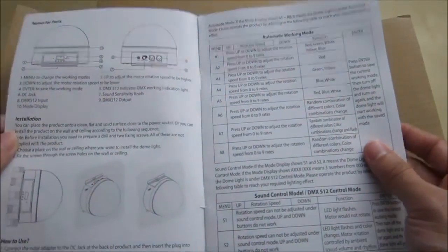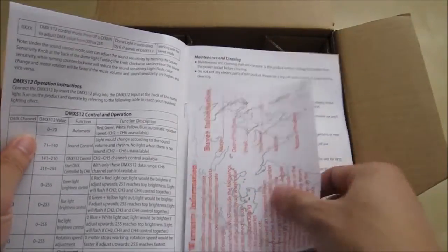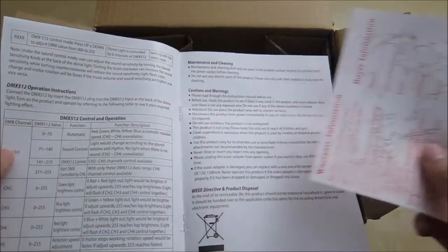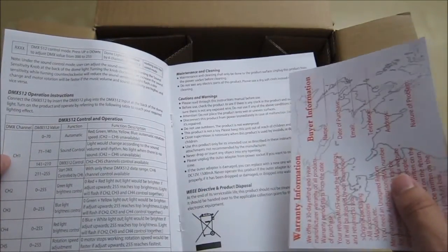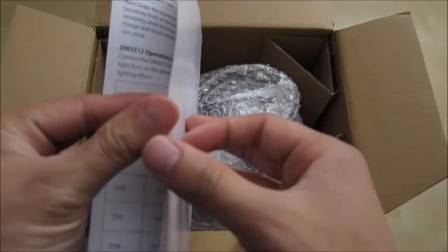Inside you have a variety of different instructions here, looks like a lot of different menus. You also have a warranty card, 30-day refund and a year manufacturer warranty. More information here on how to hook it up to a DMX machine. That's basically it, let's put it to the side.